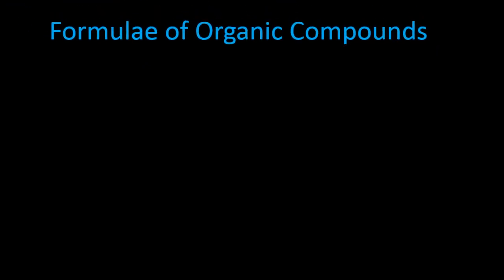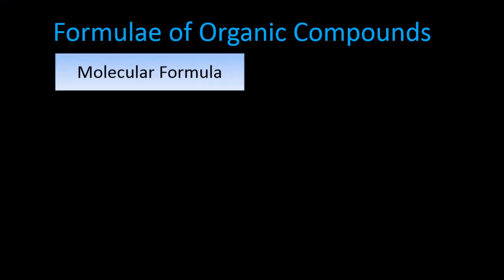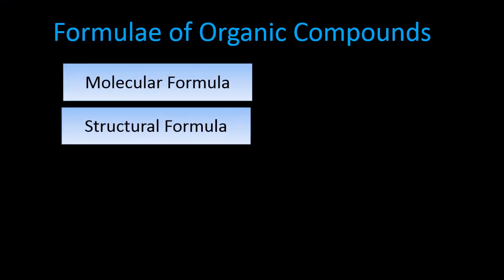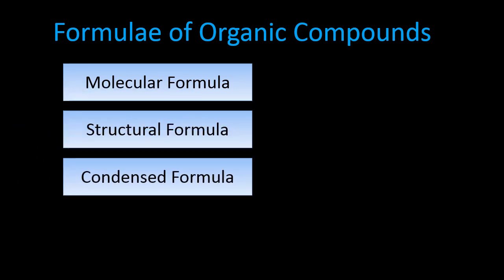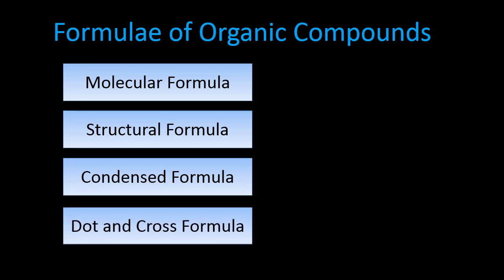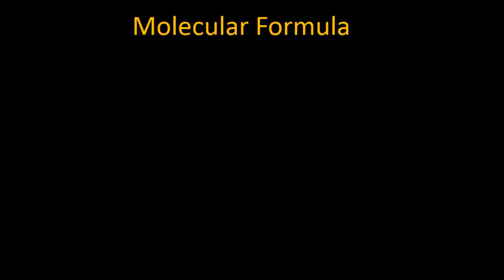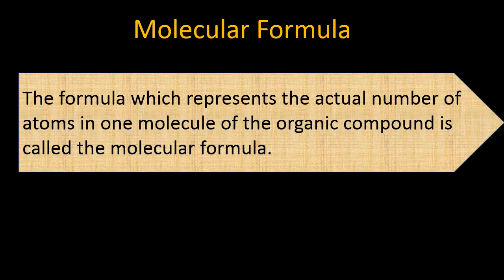The formula of organic compounds can be written in four ways: molecular formula, structural formula, condensed formula, and dot and cross formula. So let's discuss them one by one. The molecular formula is the formula which represents the actual number of atoms in one molecule of the organic compound. Here the word actual is very important.